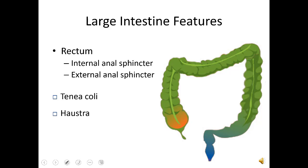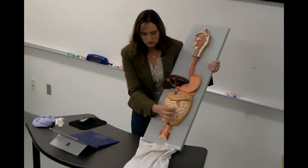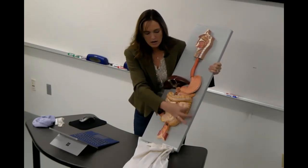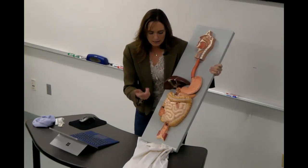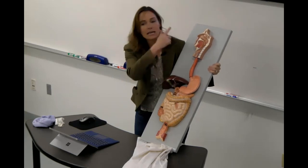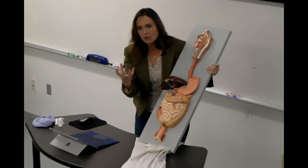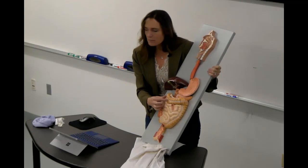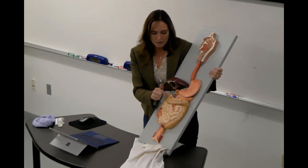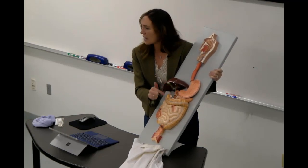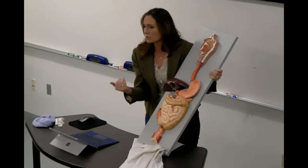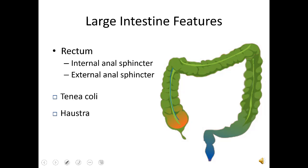Tenia coli and Haustra are the main features that characterize the large intestine visually. The small intestine is just smooth squiggly tubes. The large intestine has a prominent stripe — the tenia coli — and Haustra, which are the pouches most visually characteristic of the large intestine.